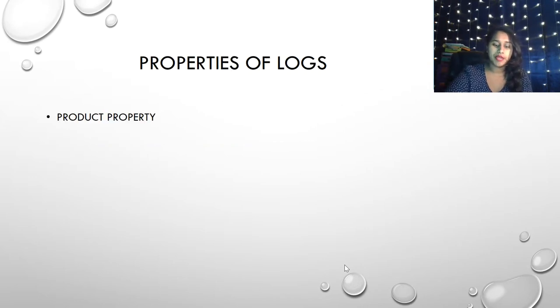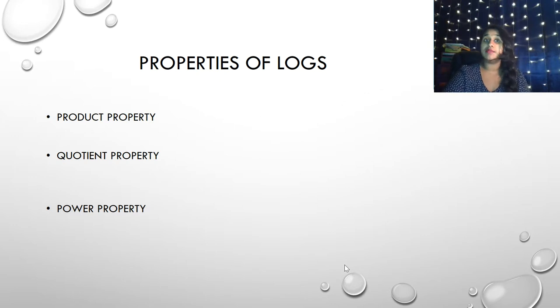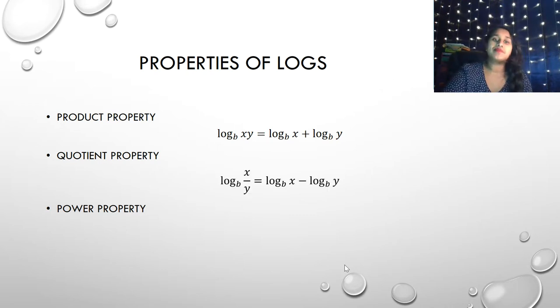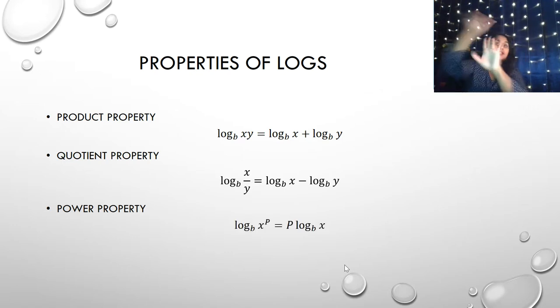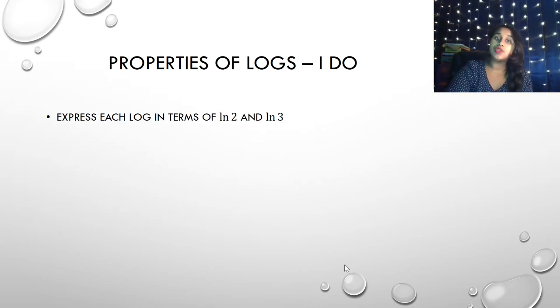Okay, so here's our product property, quotient, and our power property. Product means multiplication. So this means that if I have a log that has a multiplication within the parameters, I can split that up and actually add them, or vice versa. Same with quotient. If I'm dividing, I can subtract. And hey, where do these properties look familiar from? These are the same properties that we have in exponents, but we're just applying them a little differently. However, my power property is different than my exponents. If I have something to a power, I can actually take that power and rip it to the front.